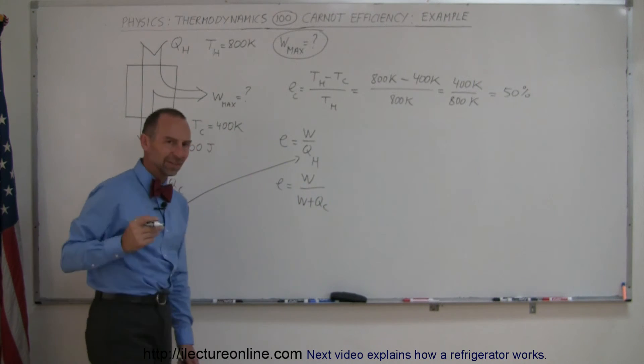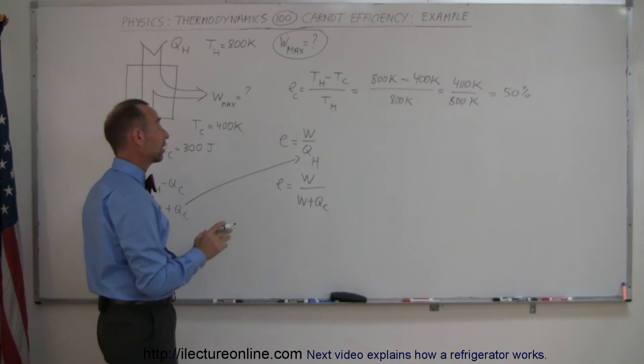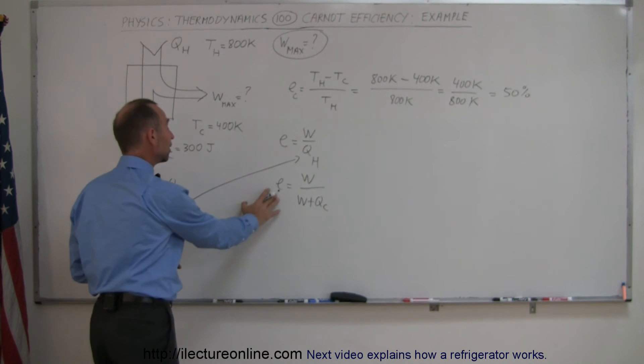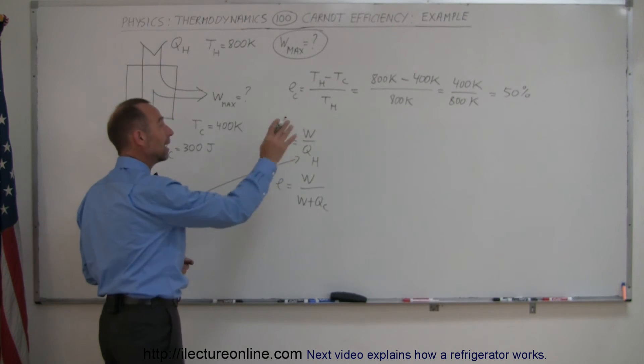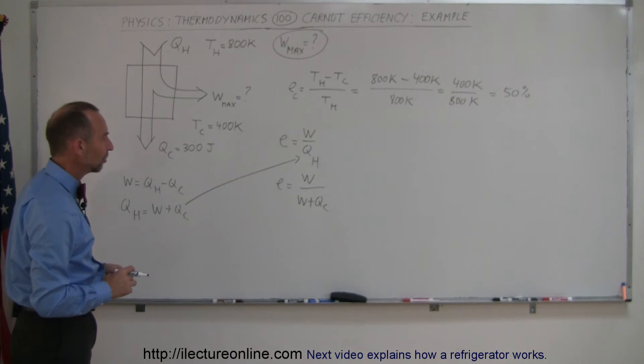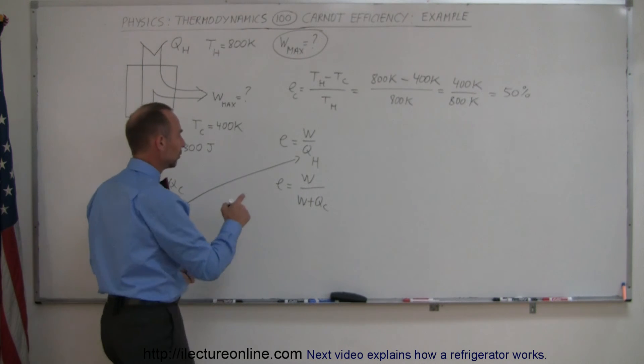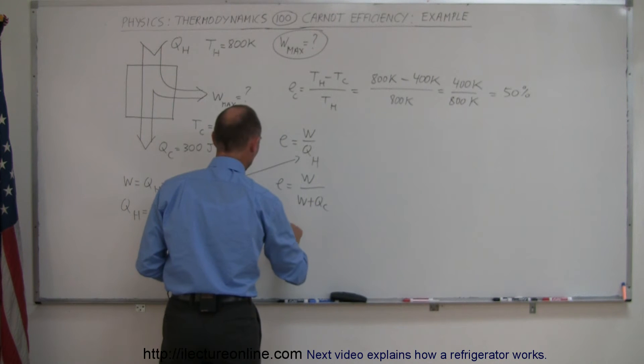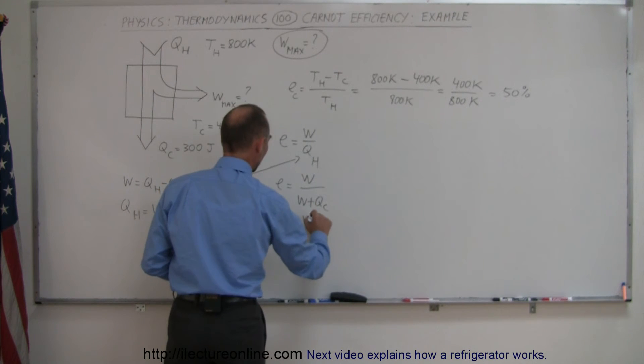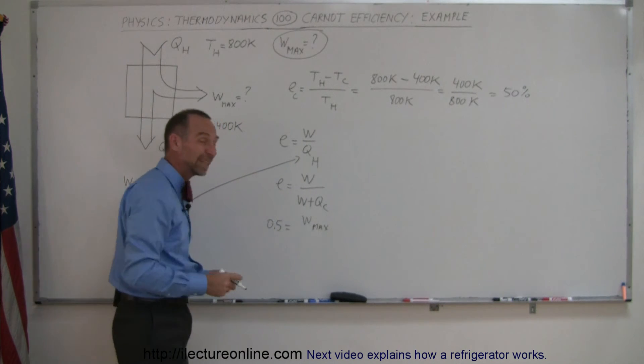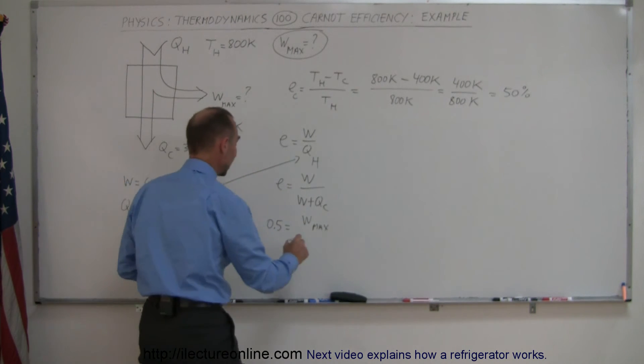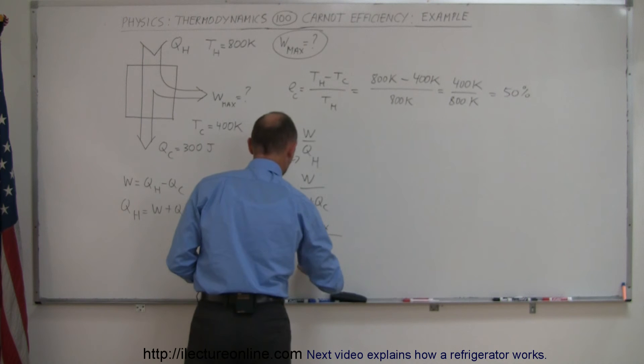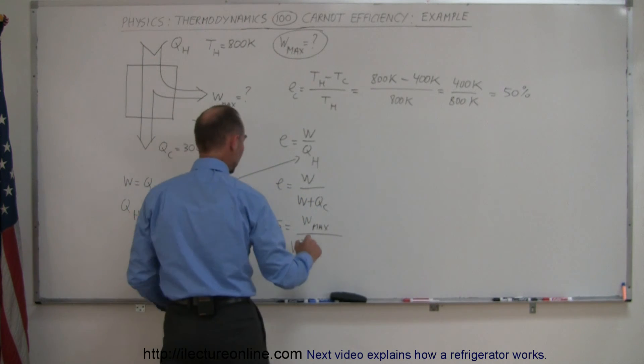Now you say, well, I still can't go any further because I don't know what work is, but you do know what the efficiency is. You were given the efficiency to be half or 50%, so let's replace that. So this becomes 0.5 is equal to work max, now, since we use the Carnot efficiency, we're going to get the maximum work that we can possibly get out of this engine, divided by work max plus Q cold, which was 300 joules.